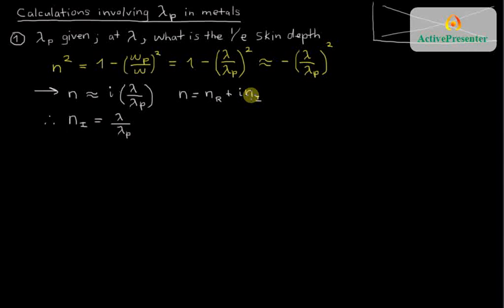And we are making an important assumption here, which is that we're going to neglect any magnitude of n real. We're going to assume that the full refractive index of this metal in this simple model is only given by this imaginary component. We have no way, if we're given lambda p, to estimate what the small component of the real refractive index is.